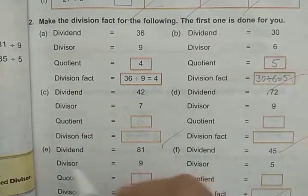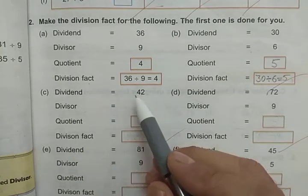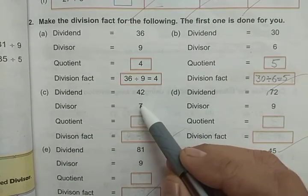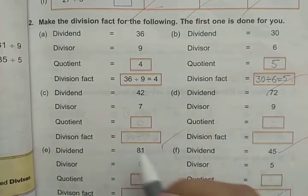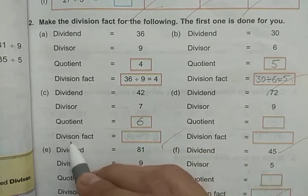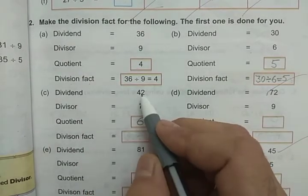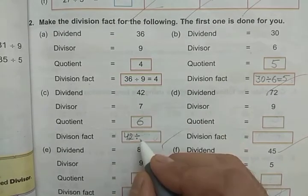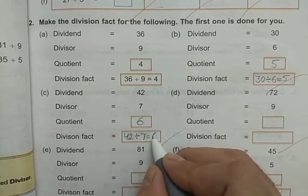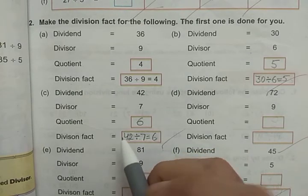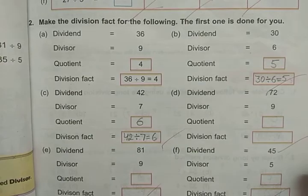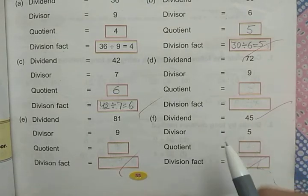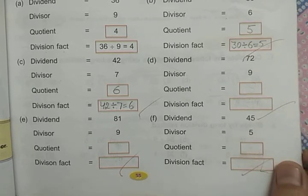Next: dividend is 42, divisor is 7. We have to divide 42 by 7. Recite the table of 7 till 42: 7 sixes are 42, so the result is 6, which is our quotient. The division fact: 42 divided by 7 equals 6. Dividend divided by divisor equals quotient. There are three remaining parts — try to solve them so that dividend, divisor, and quotient become clear to you. Thank you.